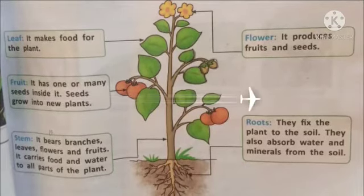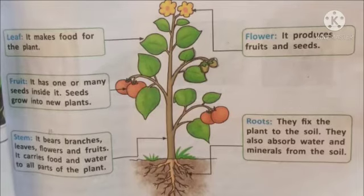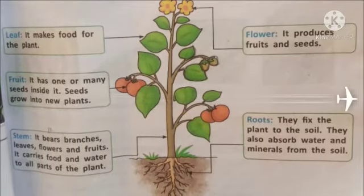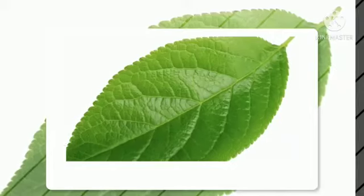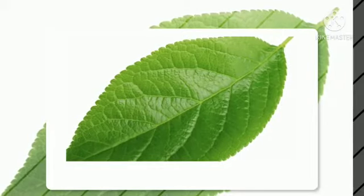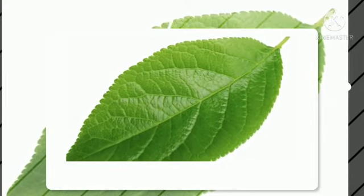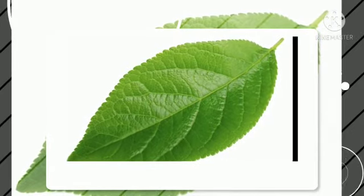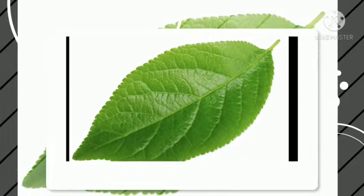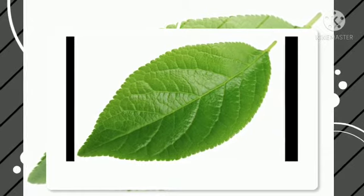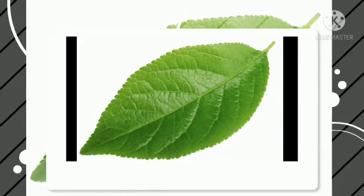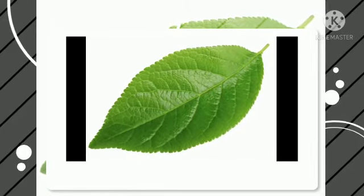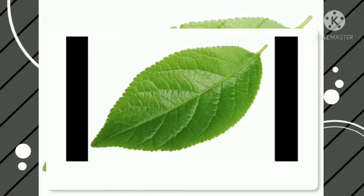We will discuss the functions of five parts of a plant. Students, look at the picture and tell me — what is this? This is a leaf. Yes, very good! This is a leaf, and its function is to make food for the plant. This is the first part of a plant.